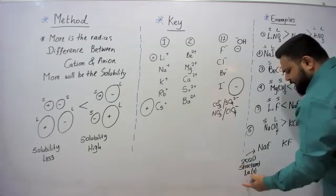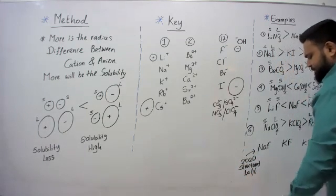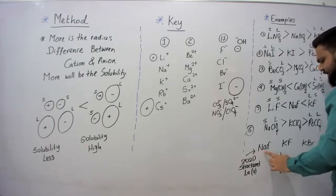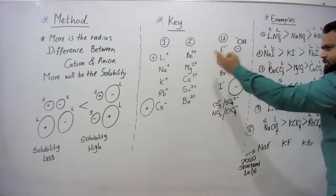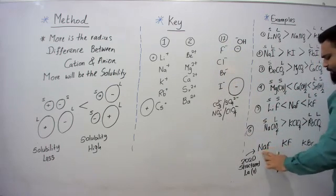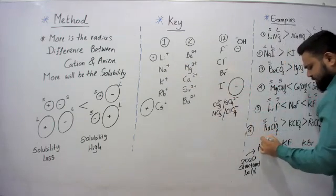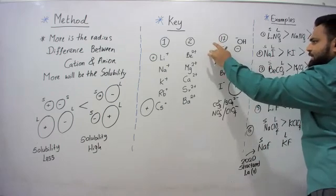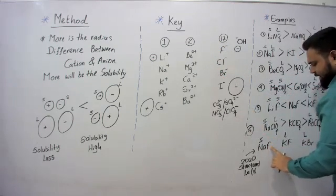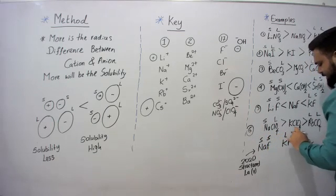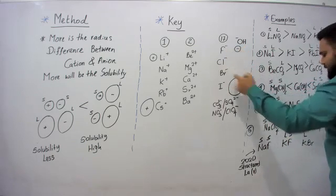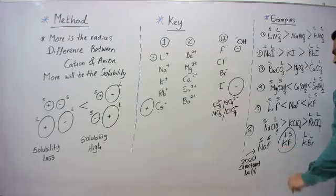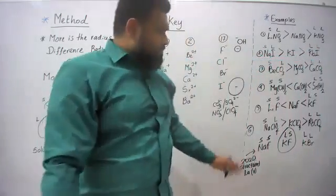This is from the 2020 structured essay question number 1, part A, roman numeral (v). They are asking: among NaF, KF, and KBr, which is more soluble? Let's apply the key. Among sodium and potassium, sodium is the smallest cation. Fluoride is smaller than bromide. So NaF: small cation, small anion — small/small. KF: large cation, small anion — large/small. KBr: large cation, large anion — large/large. Therefore KF is the most soluble.